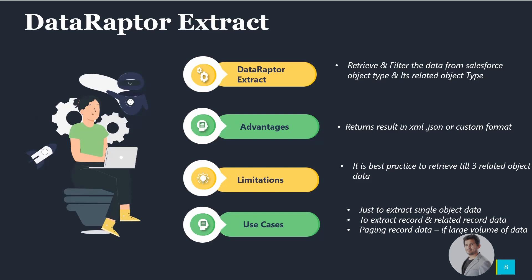When we talk about use cases: if you want to fetch only account data, you can use it. If you want to fetch account with its related object data — say account and case object data for a particular customer — you can do that. You can also fetch accounts, cases, and contacts together. It helps us get main object data as well as related object data. If you have extracted a large number of records, you can implement pagination using the offset to show relevant data to the end user.